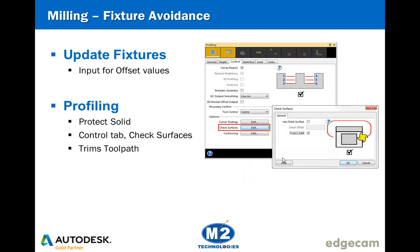The profiling cycle handles fixture avoidance slightly differently. It's still keyed on the update fixtures command, but in this case we're using the protect solid checkbox to trim away toolpath that runs through fixture areas. At Edgecam 2013 R2, the protect solid switch was added on the control tab to allow machining a feature and gouge-protecting the surrounding solid. Well, the toolpath trimming now includes and is aware of fixtures as well.